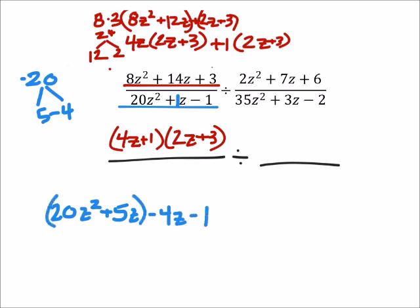And from these first two terms, I can factor out a 5z, leaving us with 4z plus 1 in the parentheses. Now out of these next two terms, I can factor out a negative 1, and that would just change it to 4z plus 1.